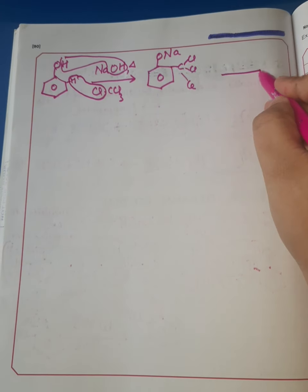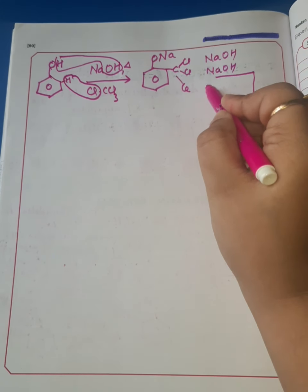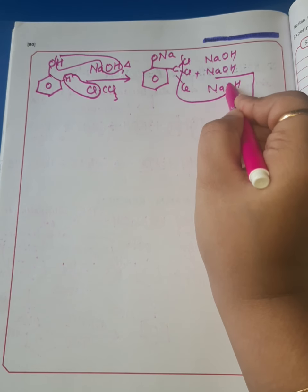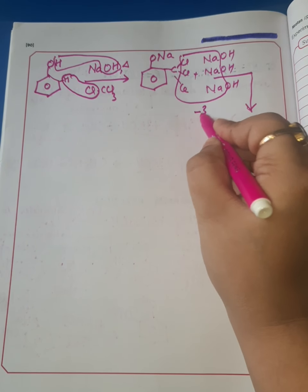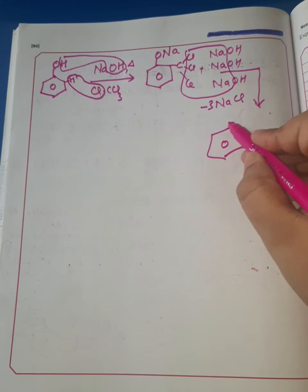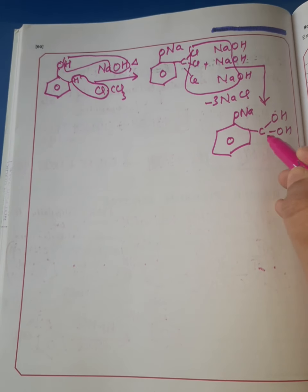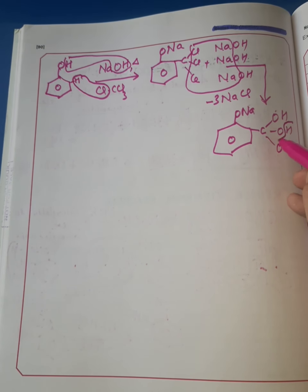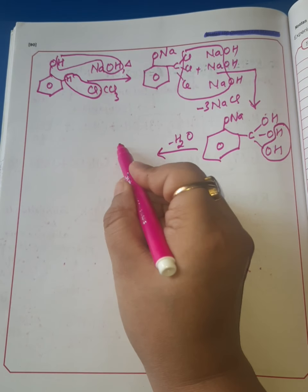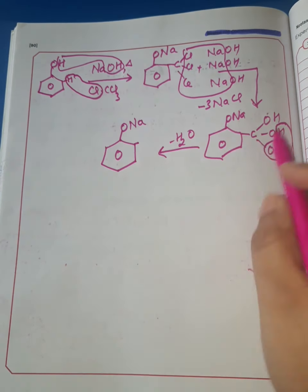This compound reacts with three molecules of NaOH. These three Cl react with 3 Na, and with removal of 3 NaCl, we get a compound with ONa and C bonded with 3 OH, an unstable situation. Soon it undergoes removal of water. With loss of water, we get sodium salt of salicylic acid, ONa and C with COOH.